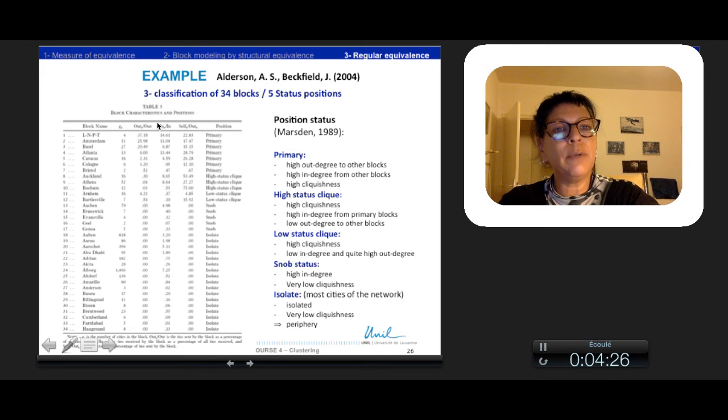They exchange mutually 22.8% of the total internal linkages of the block. So then they assigned a position status to each block according to the typology proposed by Marsden.